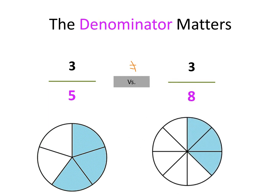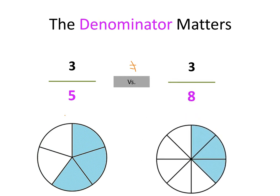Here's a picture of 3 fifths and a picture of 3 eighths. As you can see, this whole pie is about the same size as this whole pie, so we can make a visual comparison. I have 3 out of the 5 pieces shaded here to represent the 3 fifths over on this side, and I have 3 out of the 8 pieces shaded on this to represent the 3 eighths.